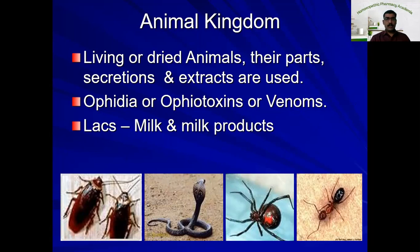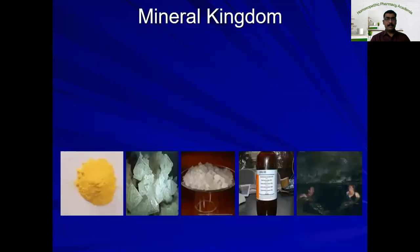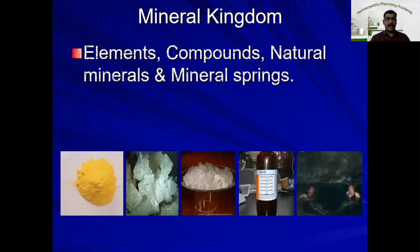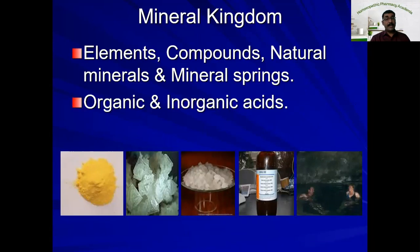The next source of homeopathic drugs is the mineral kingdom. The mineral kingdom contains a lot of drugs taken from elements, compounds, natural minerals or mineral springs, etc. It also includes medicines prepared from organic and inorganic acids. That is one of the sources of homeopathic drugs.